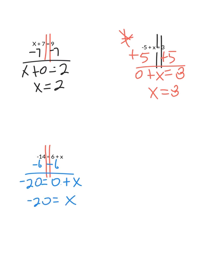Negative 20 equals x. Going back, these are the types of problems that are good to check. Negative 14 equals 6 plus negative 20. Negative 14 equals 6 minus 20. And yes, this is correct.